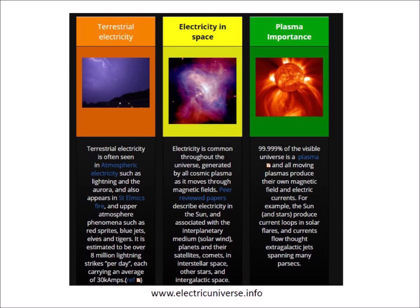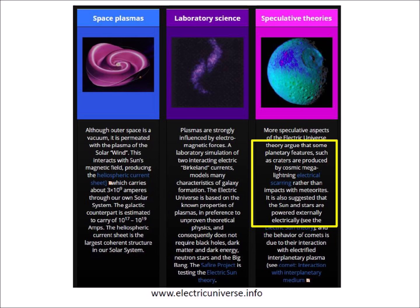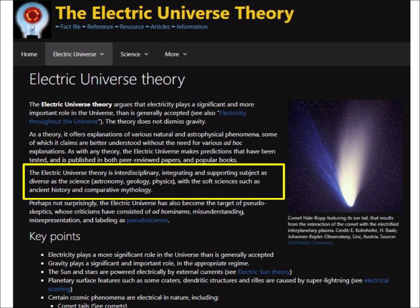So far, everything looks very standard and not very controversial. The first three topics of the homepage are terrestrial electricity, electricity in space, and plasma importance. The descriptions are very standard; there is nothing to challenge or fight about. The topic of space plasmas does not have anything controversial, but the topic of laboratory science rejects several well-established ideas of physics by saying that the Electric Universe does not require black holes, dark matter and dark energy, neutron stars, and the Big Bang. The topic of speculative theories goes way out on a limb and proposes that some planetary features, such as craters, are produced by cosmic mega-lightning electrical scarring rather than impacts with meteorites, and that the Sun and stars are powered externally electrically. This material is not peer-reviewed, so anything goes.